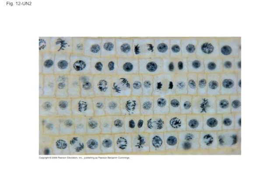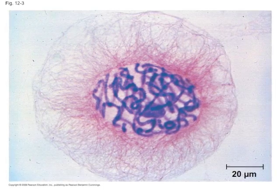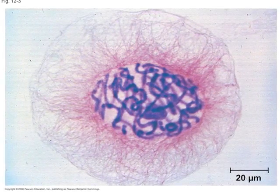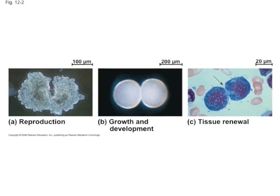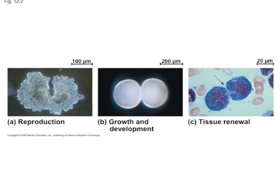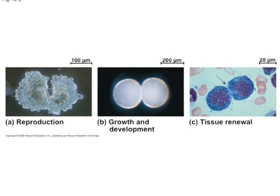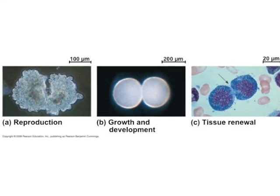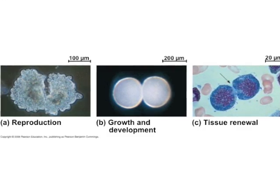The most important part of the cell cycle is to get the genome over to the next cell, which occurs in mitosis. Mitosis is a very important part of the cell cycle. It is used for survival, the making of new cells, growth and development, and tissue renewal.